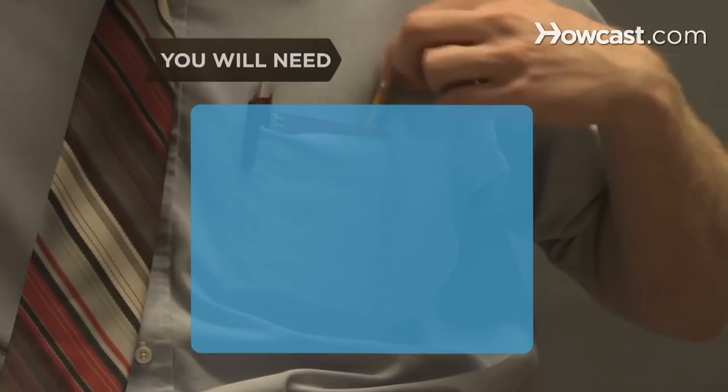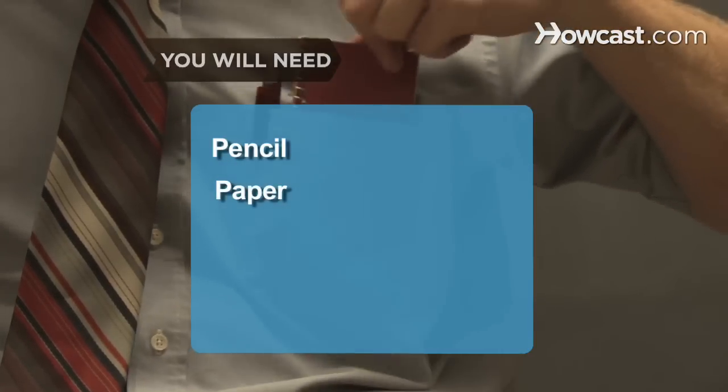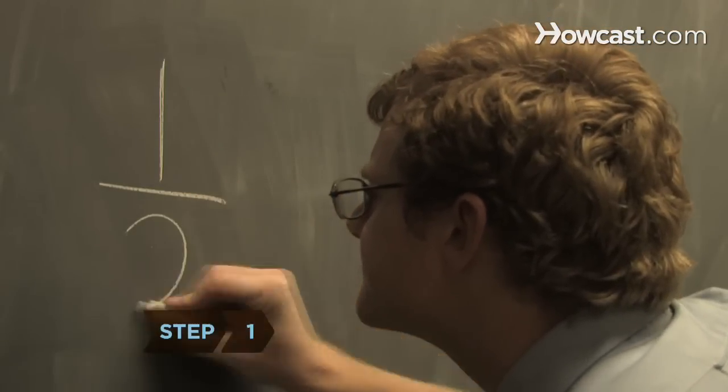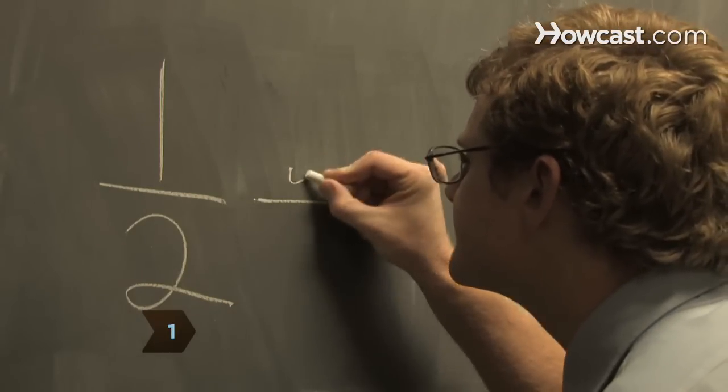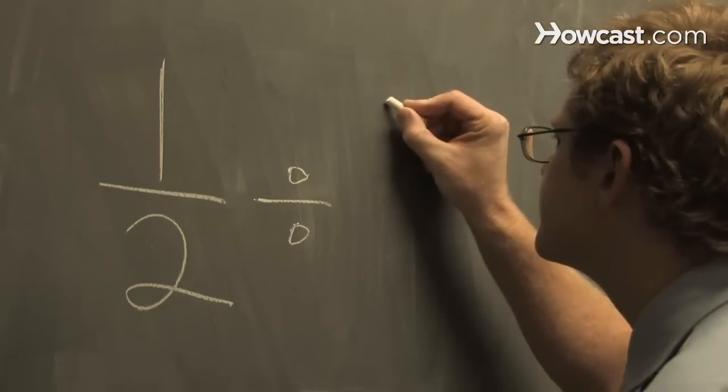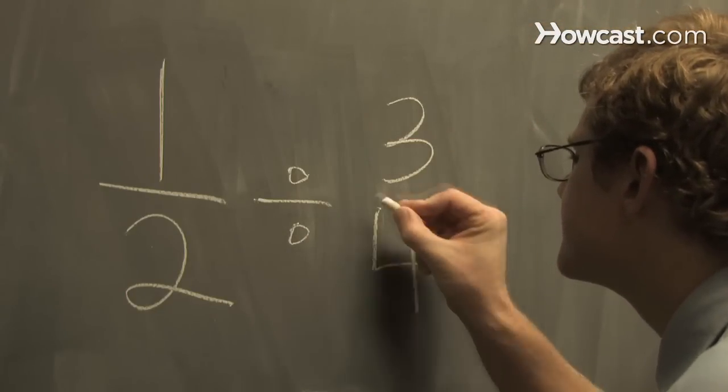You will need pencil and sheet of paper. Step 1: Write out the first fraction, a divided by sign, and the second fraction. This will help you visualize the steps you need to take to divide the fractions.